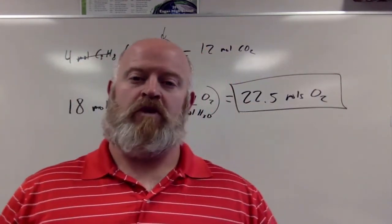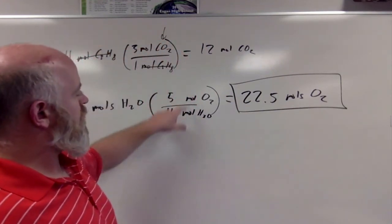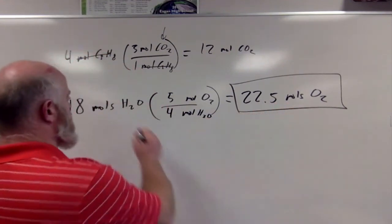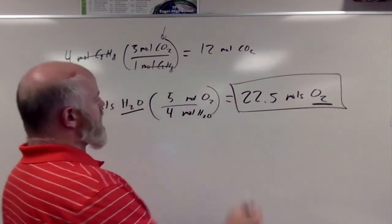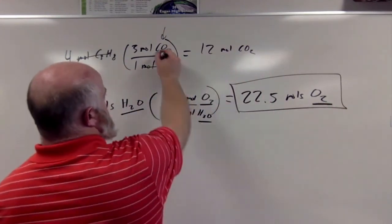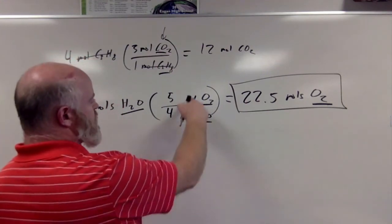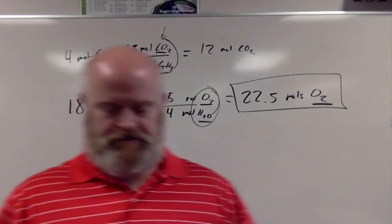We're able to take one substance, because of the equality within a balanced chemical equation, and convert to another substance. The key for this reaction is we're converting from water to oxygen. You'll notice in my labels, I'm putting the compound inside the dimensional analysis, because moles is the same here. What's different is the substance in this step.